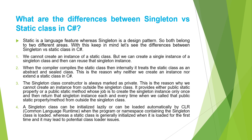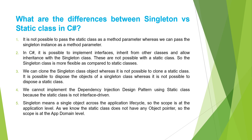It is also not possible to pass the static class as a method parameter, whereas we can pass the singleton instance as a method parameter. In C#, it is possible to implement interfaces and inherit from other classes with the singleton class. These are not possible with a static class.